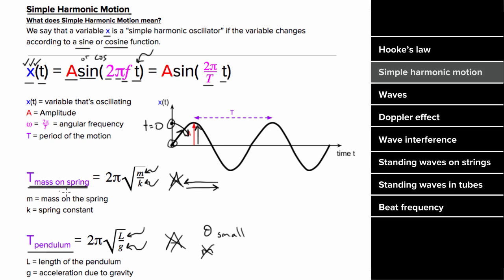How do you find the period on a graph? If you're given the graph of the motion of a simple harmonic oscillator as a function of time, the interval between peaks represents the period — the time it takes for the oscillator to reset.